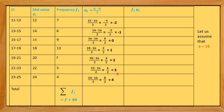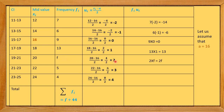Next, we find the products fi×ui. The values are: 7×(−2) = −14; 6×(−1) = −6; 9×0 = 0; 13×1 = 13; f×2 = 2f; 5×3 = 15; 4×4 = 16.